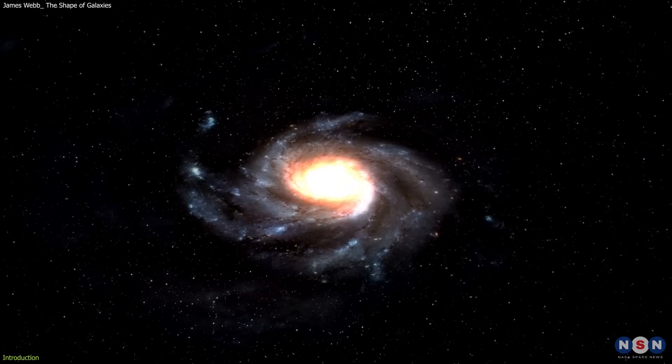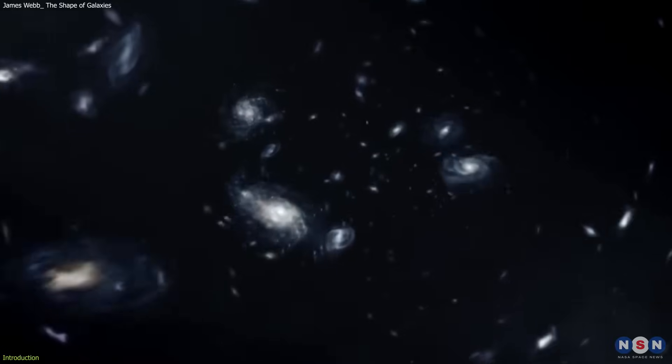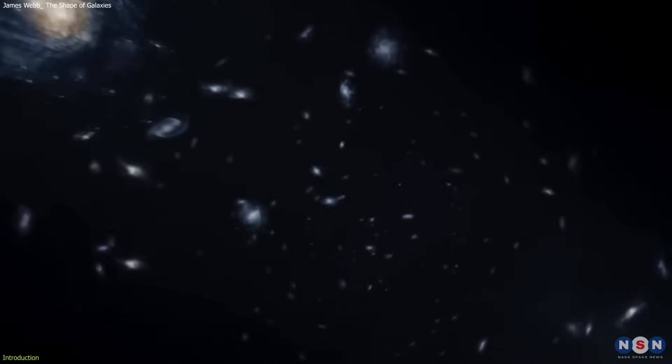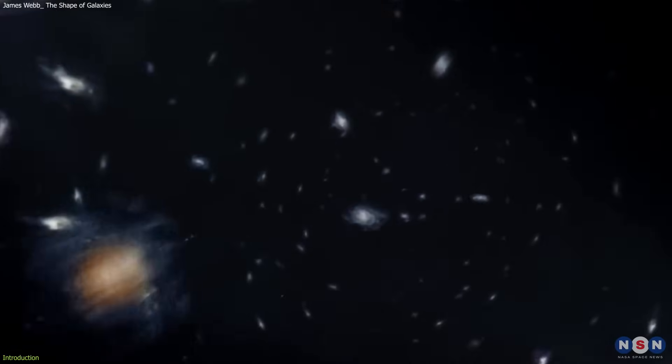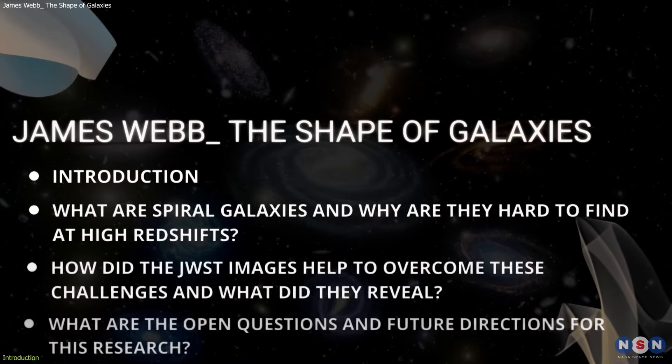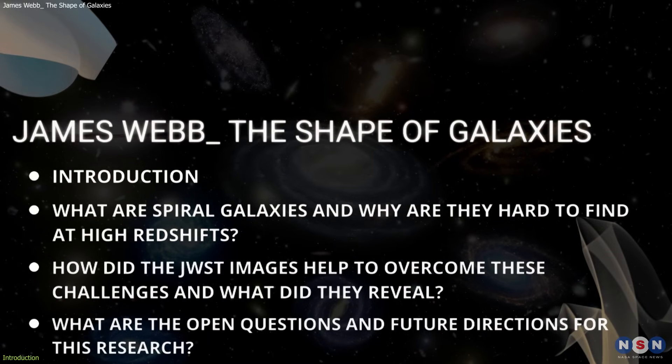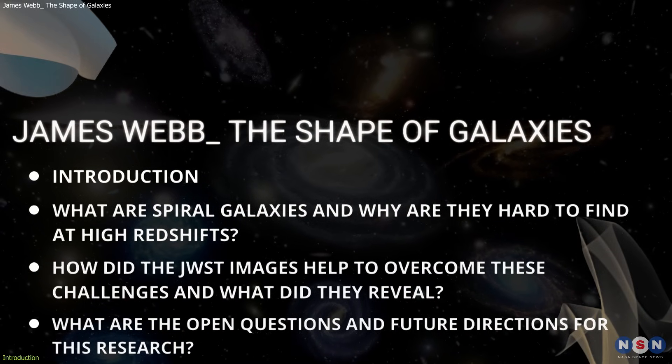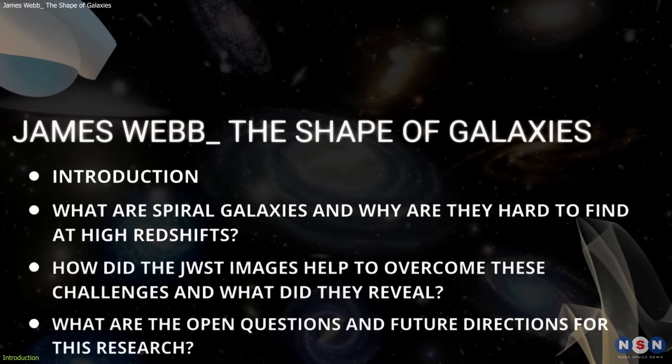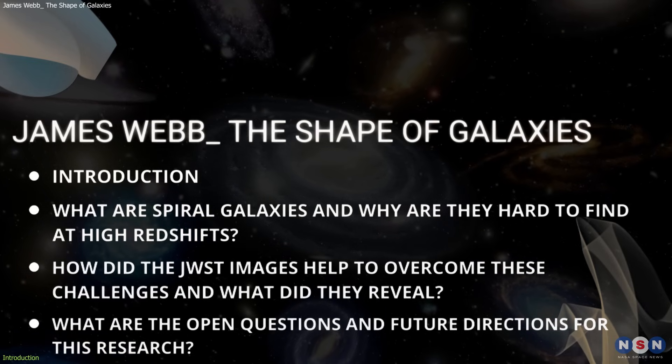But how did these galaxies form and change over time, and what can they tell us about the history of the universe and our own place in it? In this video, we will explore these questions and learn about new research that used images from the James Webb Space Telescope to study the morphology of galaxies in the early universe.